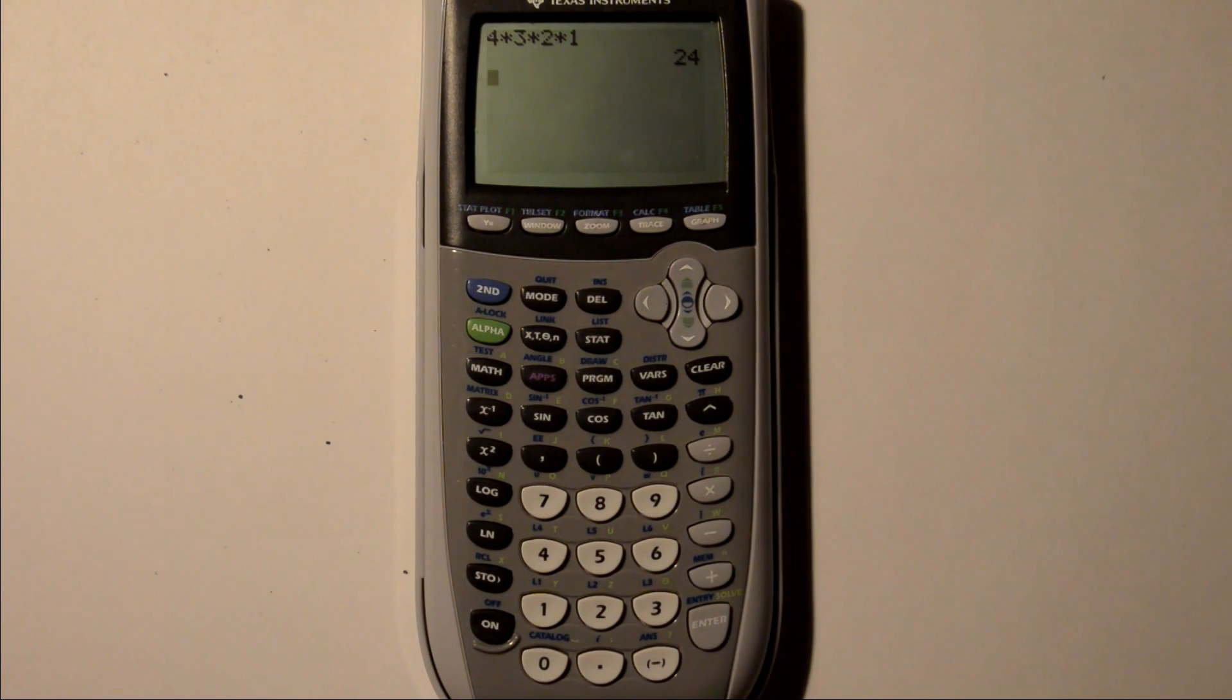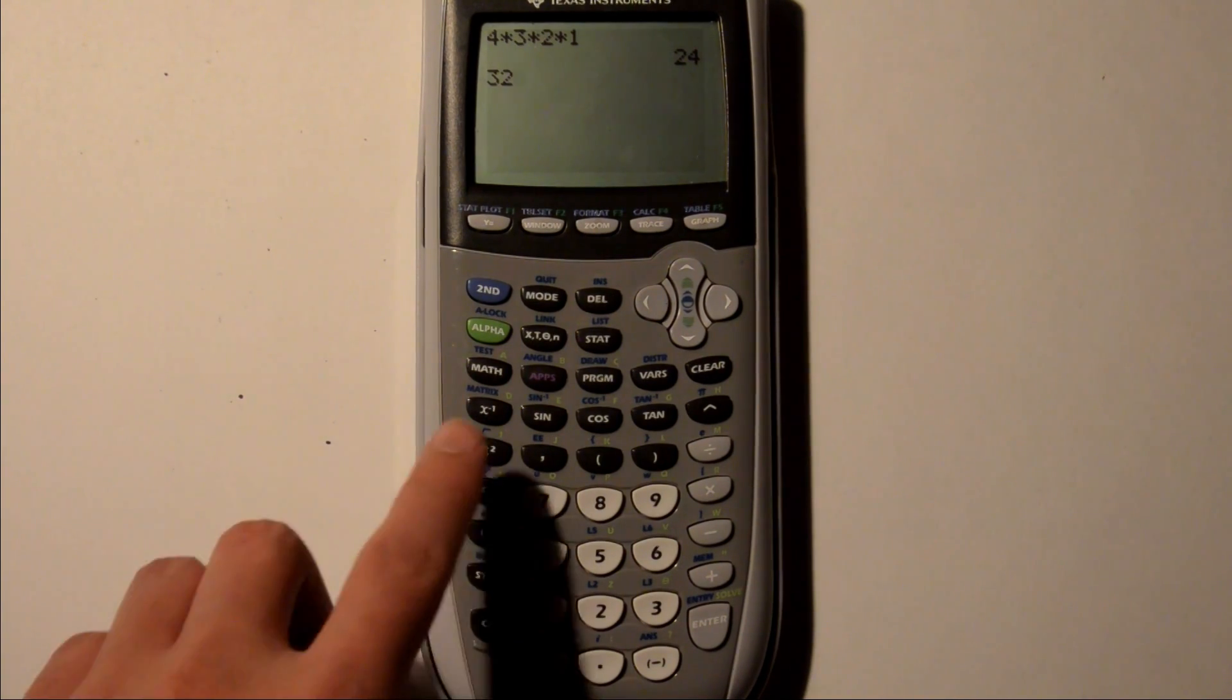start by putting in the number you want to do a factorial of. For example, let's start with 32. So I type 32, and then I push the math button.